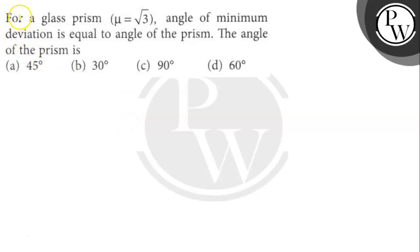Hello watcho, let's read the question. For a glass prism, μ equals root 3, and the angle of minimum deviation equals the angle of the prism. What is the angle of the prism?